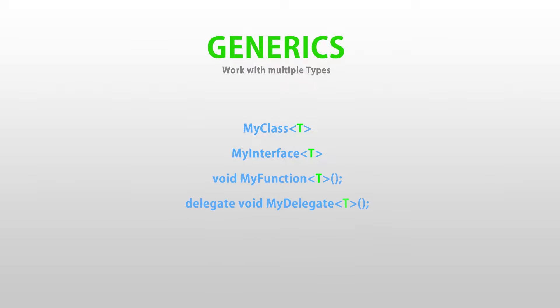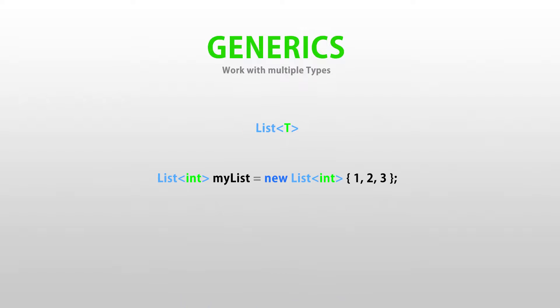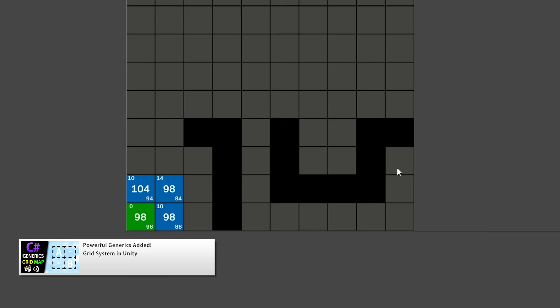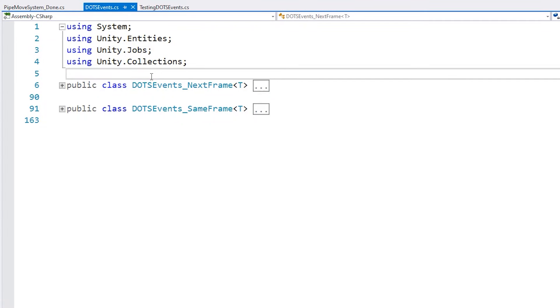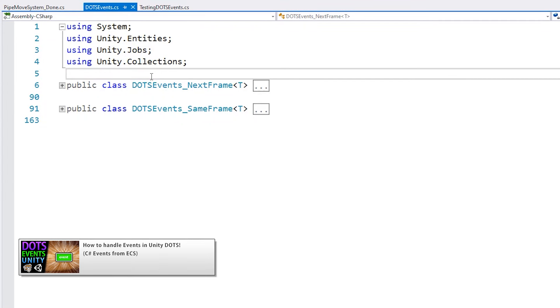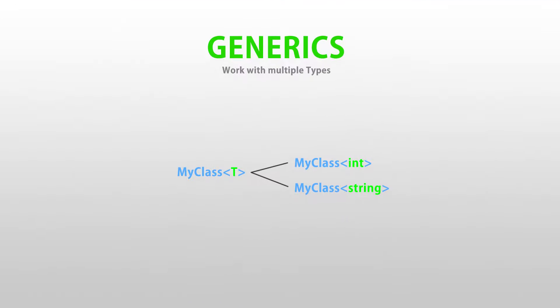You might have never heard the word generics, but if you've written some code, chances are you've used them. If you've ever used a List, then you've probably used a generic — when you define a list, you also define it with a type of elements that go inside. That's the generic parameter. Another example is the grid system from a previous video, which uses generics so each grid position can hold whatever type you want. Yet another example is handling events in Unity DOTS, where a generic class lets you define the event component with all the data you need, and use the same class customized to each particular event.